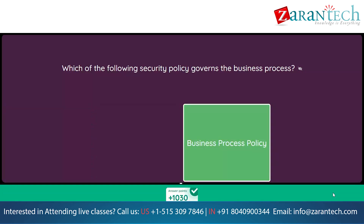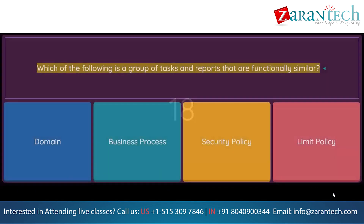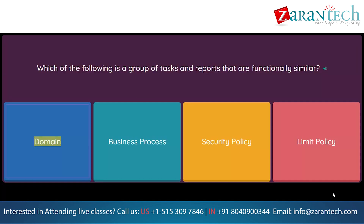Which of the following is a group of tasks and reports that are functionally similar? Option 1: Domain. Option 2: Business Process. Option 3: Security Policy. Option 4: Limit Policy.